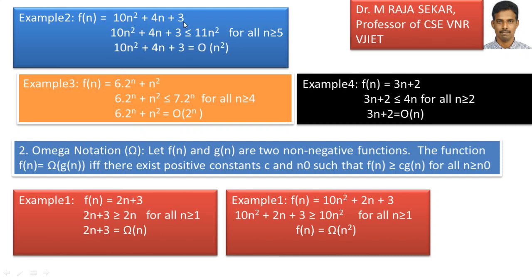Example 2: let f of n equal to 10n square plus 4n plus 3. According to the growth function, n square dominates the other terms. So instead of 10n square, we write it as less than or equal to 11n square. By trial and error, it holds for all n greater than or equal to 5. Therefore 10n square plus 4n plus 3 is less than or equal to 11n square for all n greater than or equal to 5, giving us f of n equal to big O of n square, where c is 11 and n0 is 5.